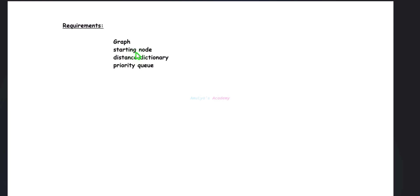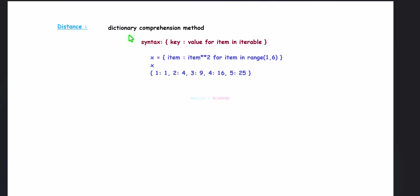After graph and starting node, we need a distance dictionary. In this algorithm we need to maintain the minimum distance of every node. Initially we take the source node distance as 0 and for all other nodes we assign infinity as the distance. To create this dictionary we will use the dictionary comprehension method.